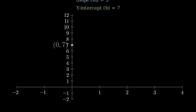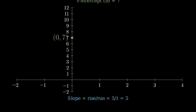The slope tells us how much y changes for each unit change in x. A slope of 5 means that for every 1 unit we move right, we move up 5 units. Let's use this to find another point on our line.